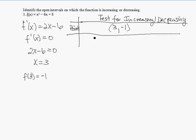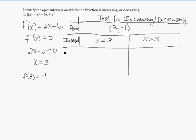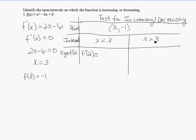The interval is broken up by x = 3, so we're going to have two intervals: when x is less than 3 and when x is greater than 3. On each interval, we're going to evaluate the sign of f prime of x. A number to the left of 3 would be f prime of 2, and a value to the right of 3 would be f prime of 4.